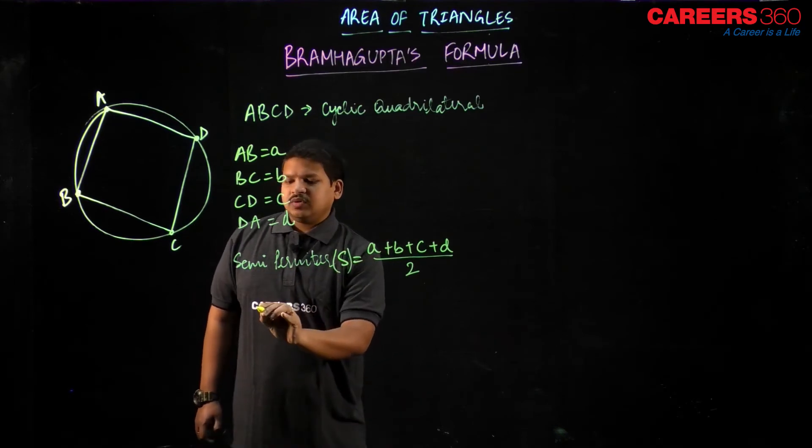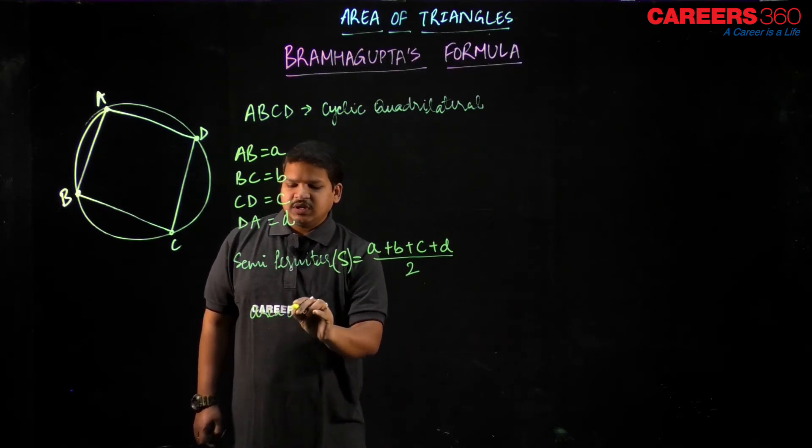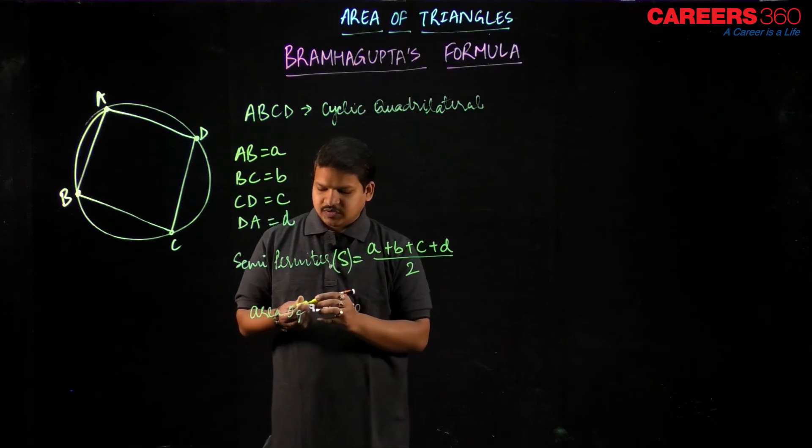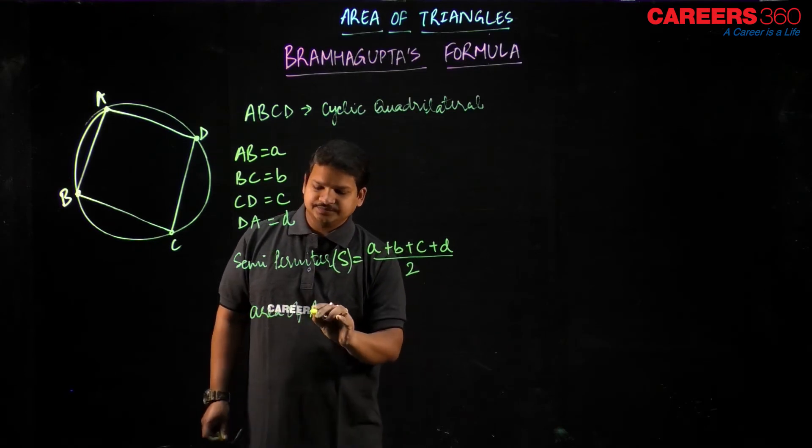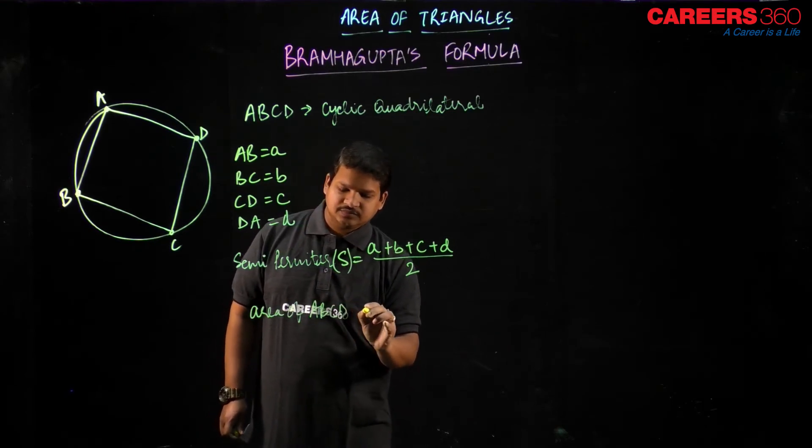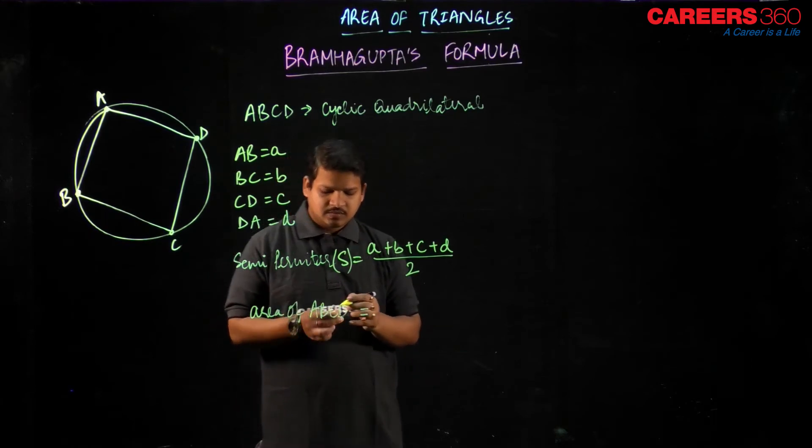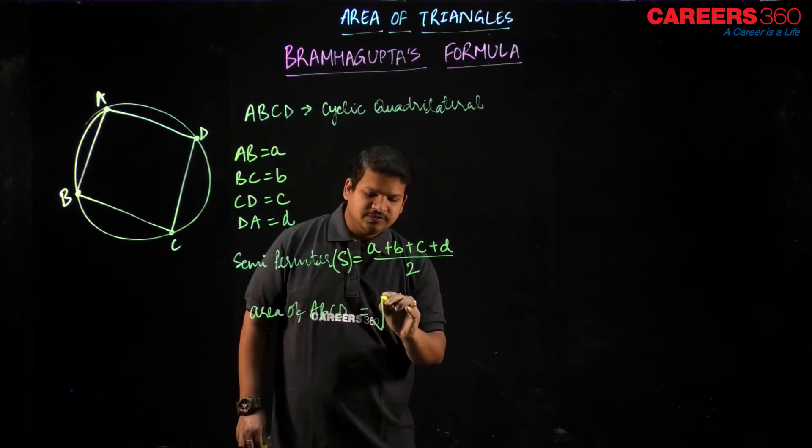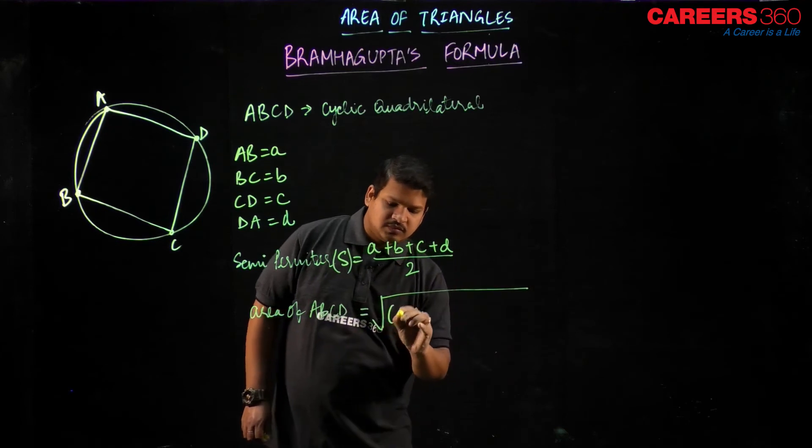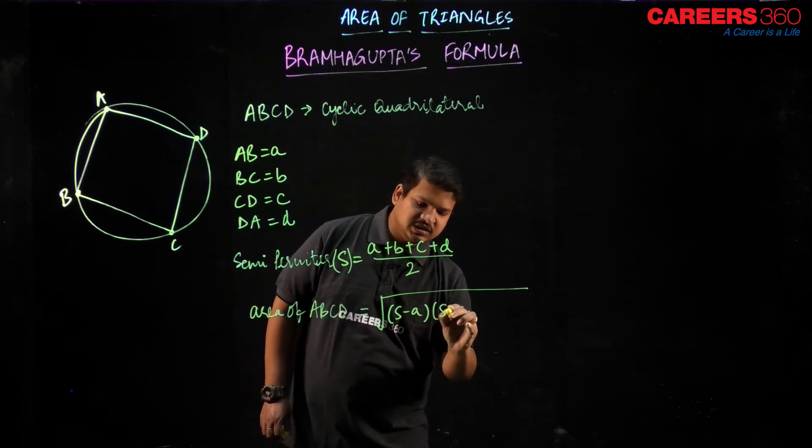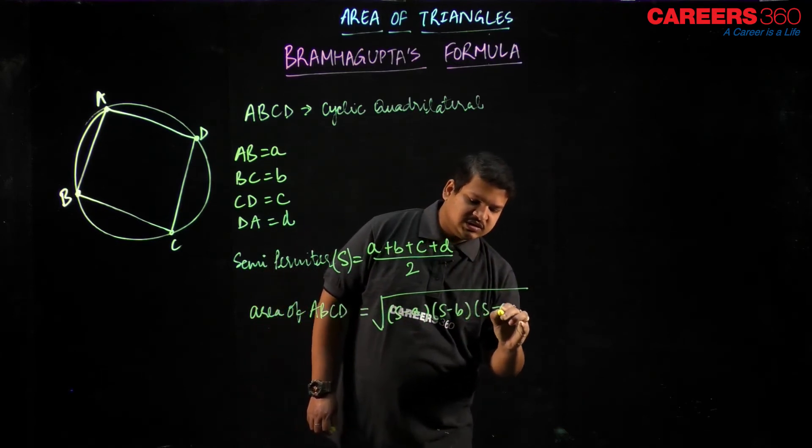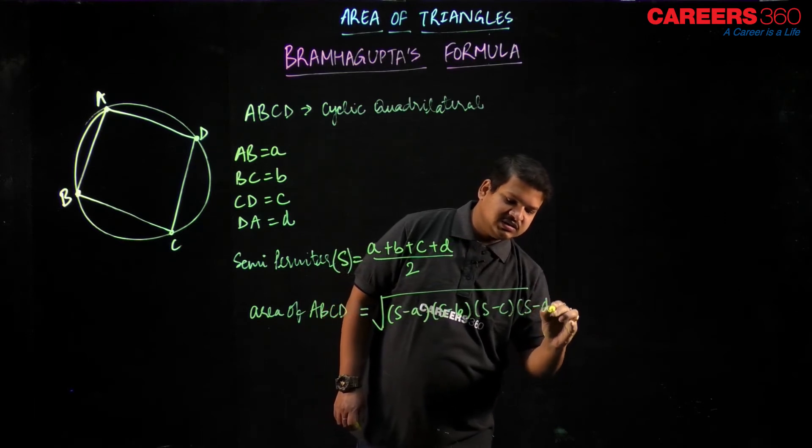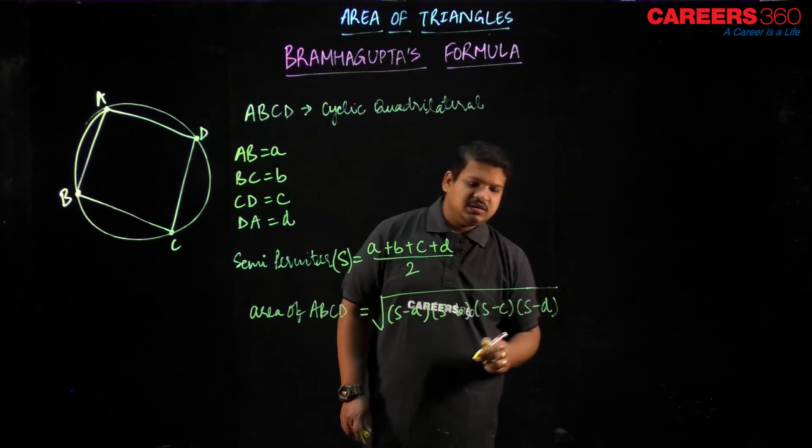So area of ABCD would be under root of S minus a, S minus b, S minus c, and S minus d, right.